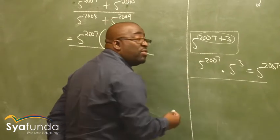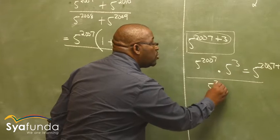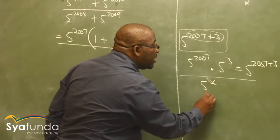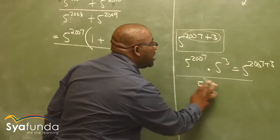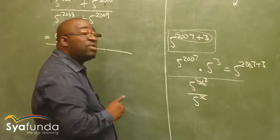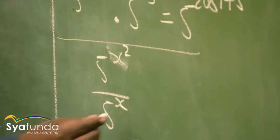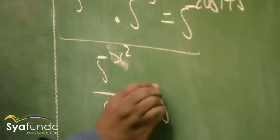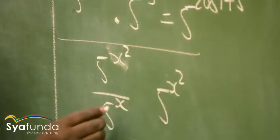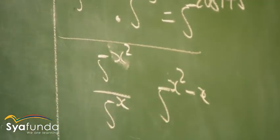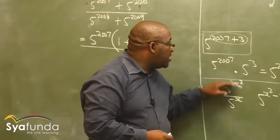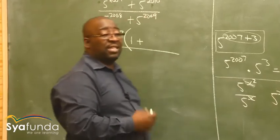But what happens when you divide? If I've got 5 to the power x squared divided by 5 to the power x, you subtract the exponent: x squared minus x. So whenever we are multiplying, you add the exponents. When you are dividing, you subtract the exponents. Those are the exponential rules.